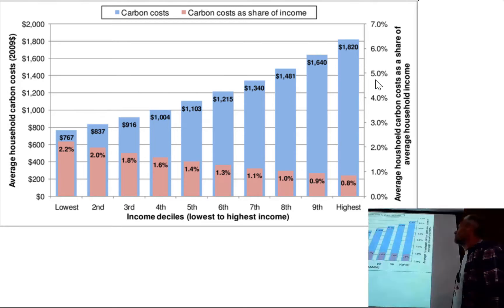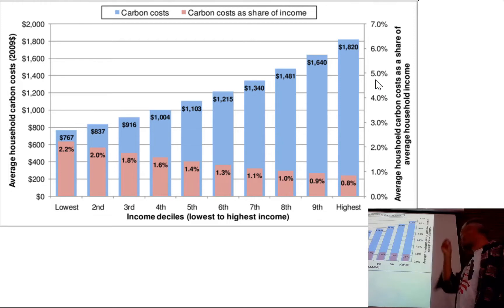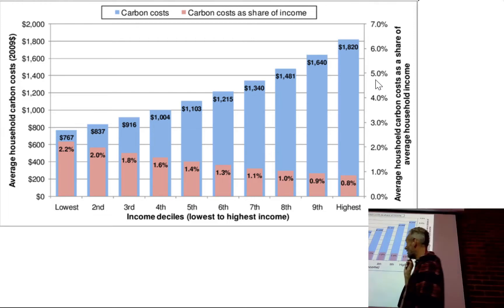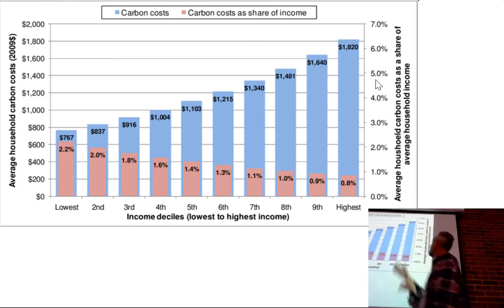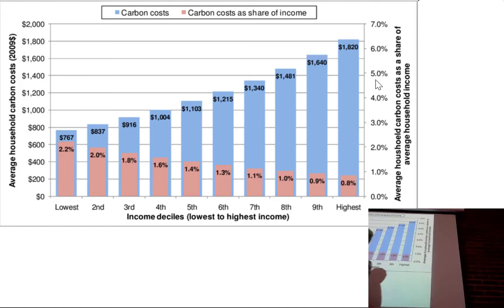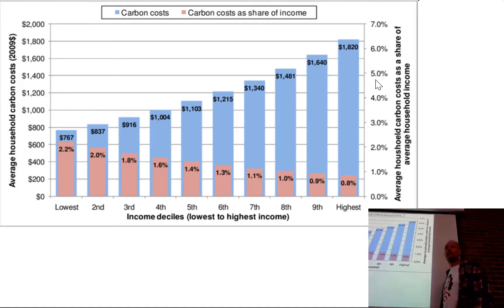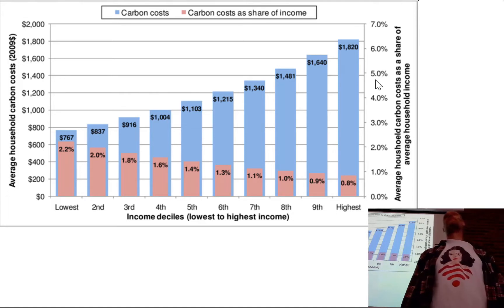If we run a model and impose a carbon tax, switching from the UK to the US, the highest decile - the richest 10% - would face an absolute cost of around $1,800 per household per year, whereas the poorest households would face about $750. That is less in absolute terms, but comparing to income, the richest would pay about 0.8% of their income towards climate policy, and the poorest would pay 2.2%.